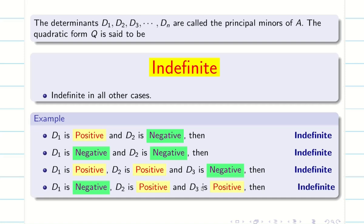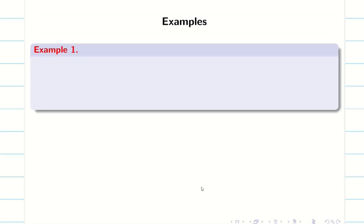Now you have a clear idea about the nature. Without finding eigenvalues or canonical form, we can find the nature of the given quadratic form. Let us go into some examples.